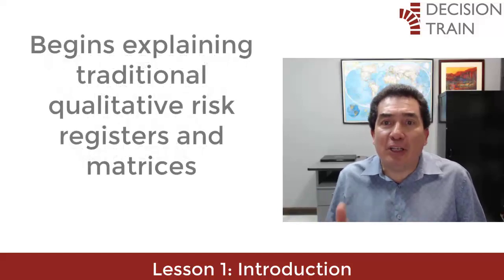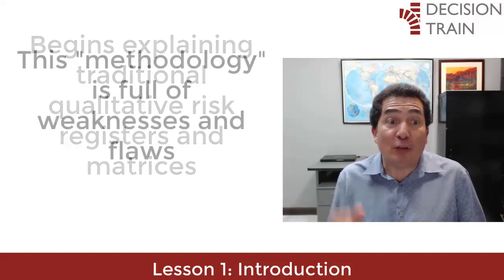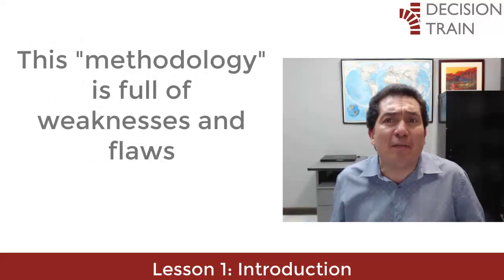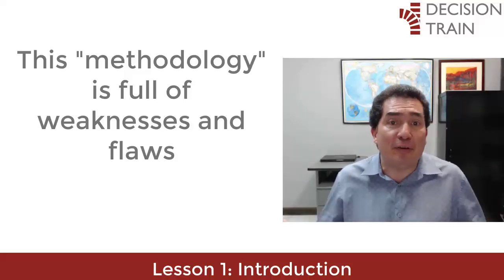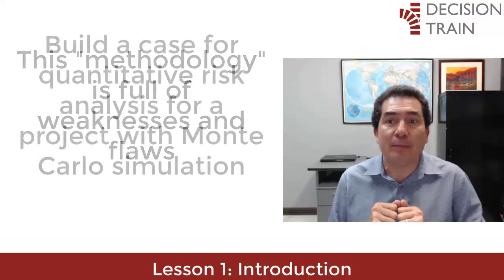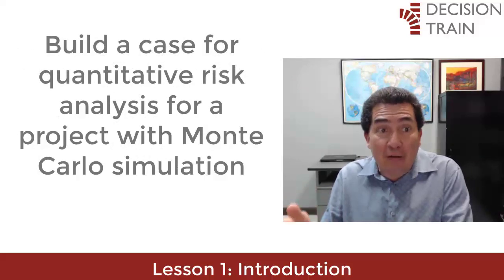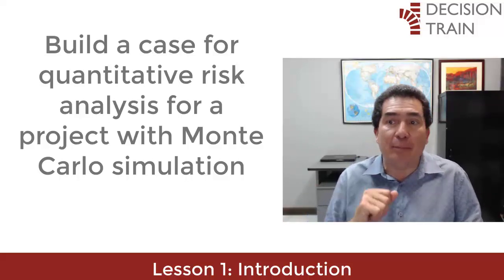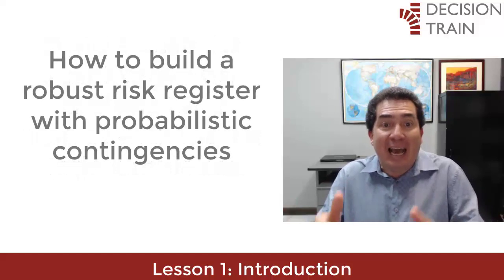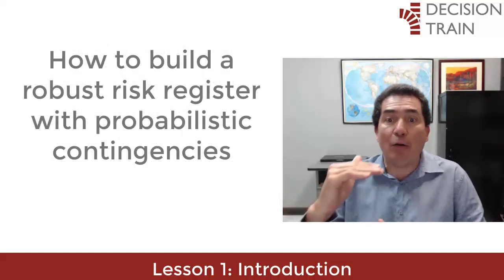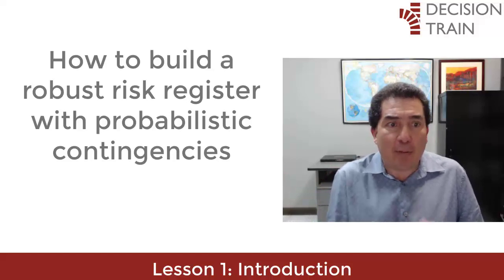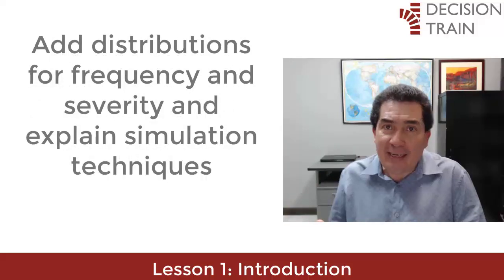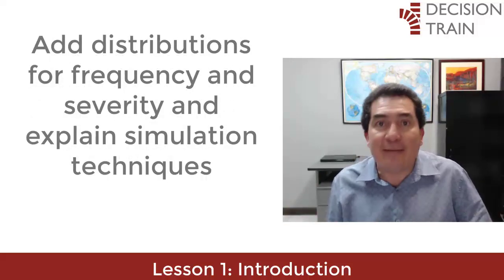This course begins by explaining traditional qualitative risk registers and matrices, and why this methodology is full of weaknesses and flaws in its attempt to use frequency and severity components to build a risk analysis. In comparison, we carefully build a case for quantitative risk analysis using a Monte Carlo simulation approach. Throughout the lessons, we add all components needed to build a robust risk register capable of building probabilistic contingencies in a project, using appropriate distributions for frequency and severity.